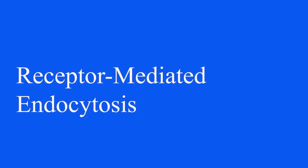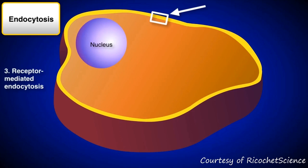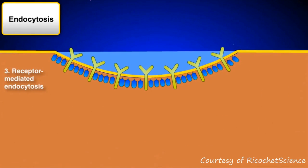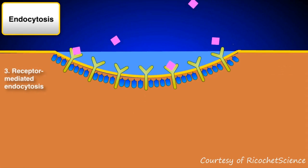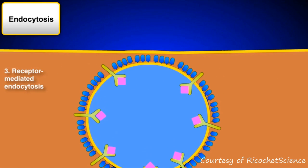Next is receptor-mediated endocytosis. RME, or receptor-mediated endocytosis, is a form of endocytosis in which receptor proteins on the cell are used to capture specific target molecules.